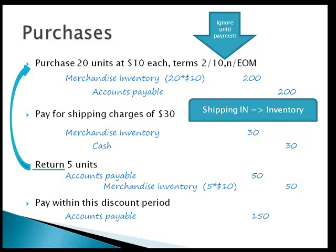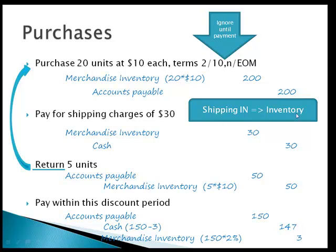So we close out accounts payable with a debit of $150. Then we credit cash — not for $150, but for $147 (the $150 less the $3 discount). Since debits and credits don't balance, we need a $3 credit to merchandise inventory. This says we didn't pay $150 for inventory — we paid $147. We're reducing the cost of inventory. So inventory in the T-account would be $200 plus $30 minus $50 minus $3, totaling $177.